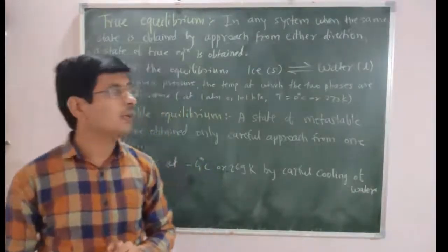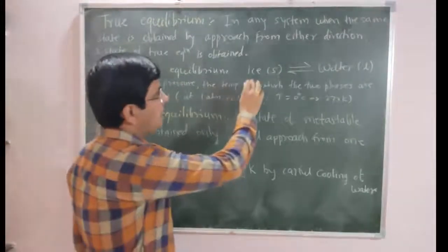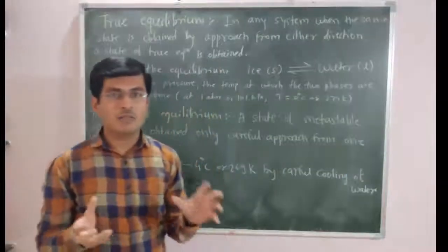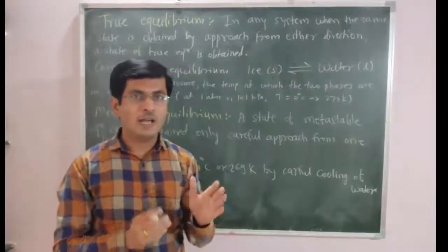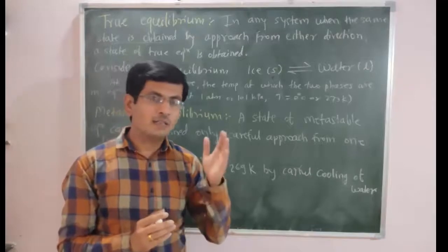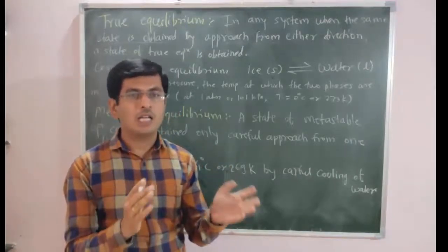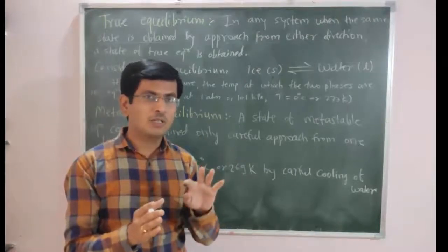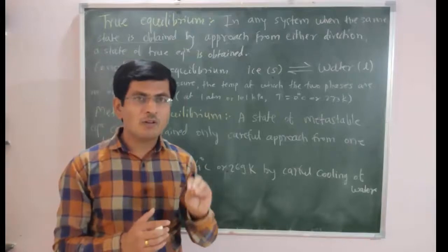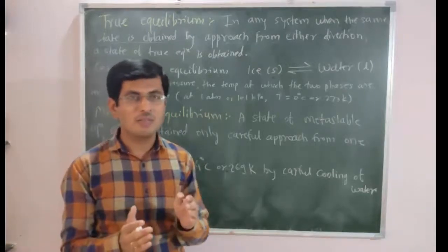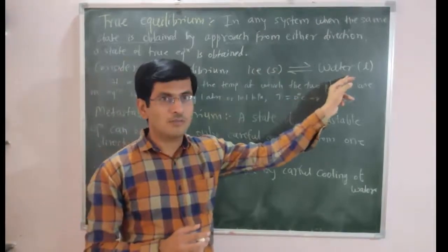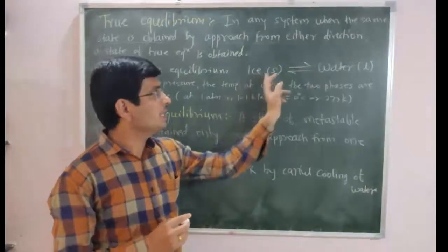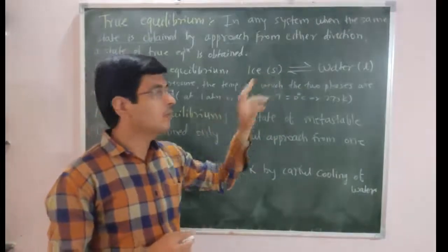For example, consider the equilibrium in the case of ice and water — ice being the solid phase and water being the liquid phase. The same state of equilibrium is obtained from either direction, that is by melting of ice or by freezing of water. Such equilibrium is called true equilibrium.